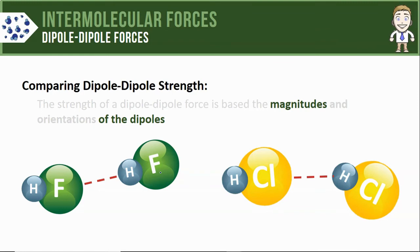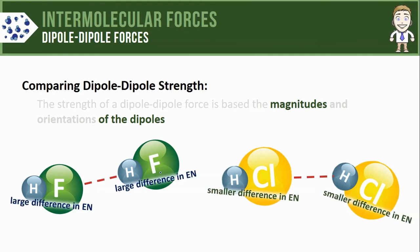That means the difference in electronegativity between hydrogen and fluorine is going to be much larger than the difference in electronegativity between hydrogen and chlorine.